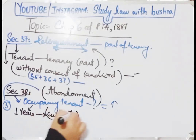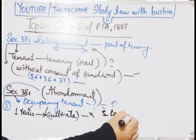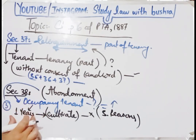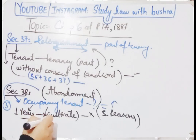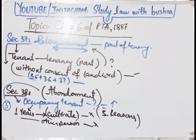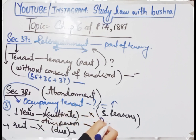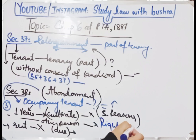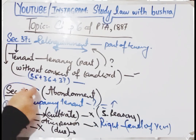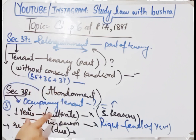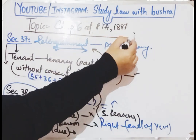Agar koi tenant claim kar raha hai ke uska is zameen par right of occupancy hai, lekin usne ek saal se zyada arse tak us zameen par koi cultivation nahi ki — aur is cheez ke koi sufficient reasons bhi provide nahi ki — to pehli condition poori hoti hai. Secondly, usne us zameen ka rent pay nahi kiya, wo rent abhi tak due hai. To uska right of occupancy us saal ke end hone tak khatam ho jayega. Simply: ek saal se zyada zameen cultivate nahi ki ya zameen ka rent pay nahi kiya to us occupancy tenant ki tenancy abandon ho jayegi.